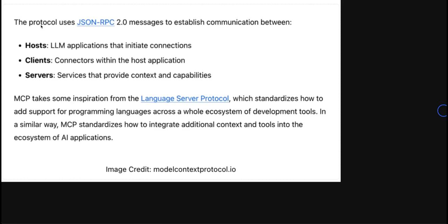It's an open source protocol introduced by Anthropic that uses JSON RPC 2.0 messages to establish communication between three different components: hosts, clients, and servers. Hosts are applications running AI models, an example would be Claude desktop or AI driven IDEs like Cursor or Windsurf that needs access to external data or tools. The second one is clients. These are modules within hosts responsible for communication with servers.